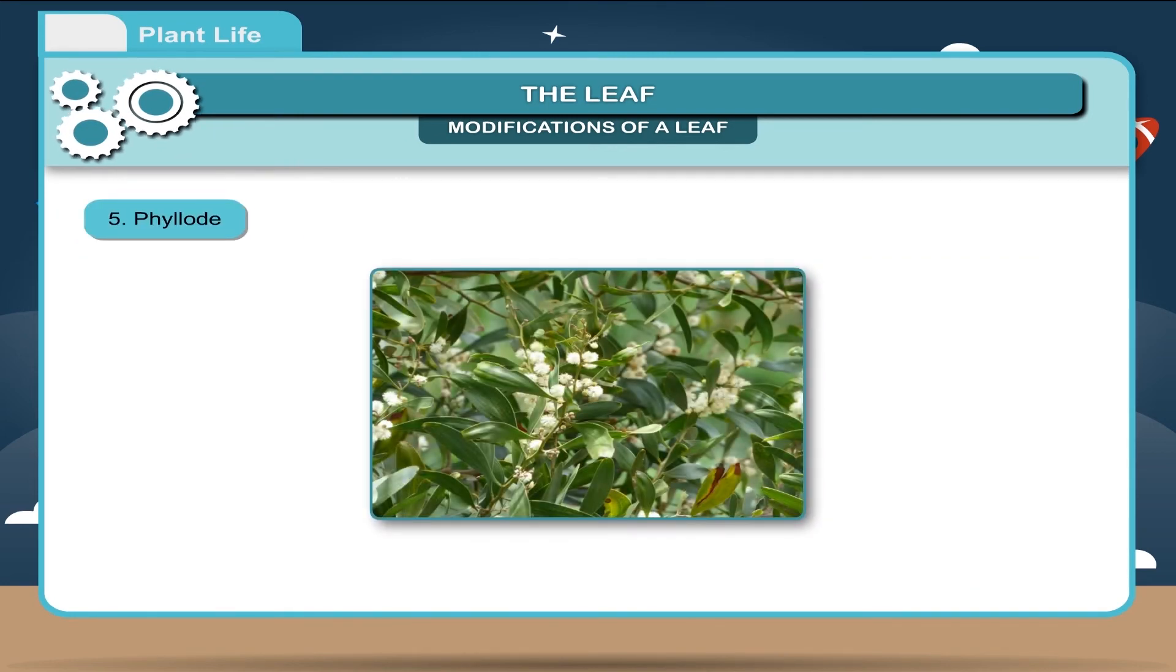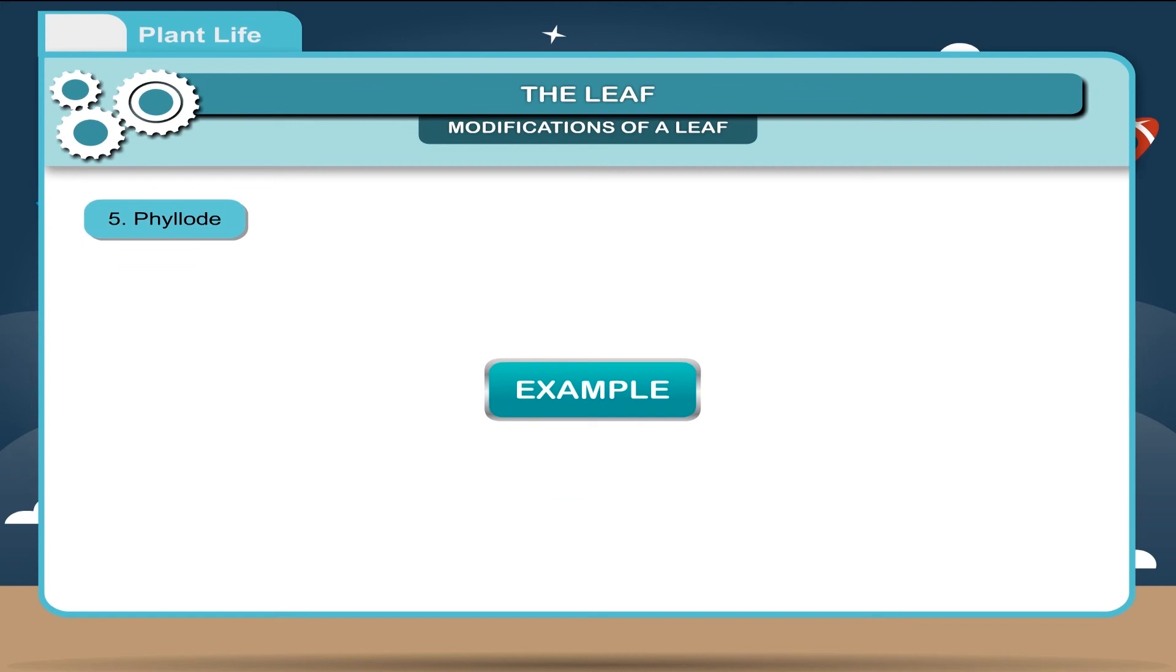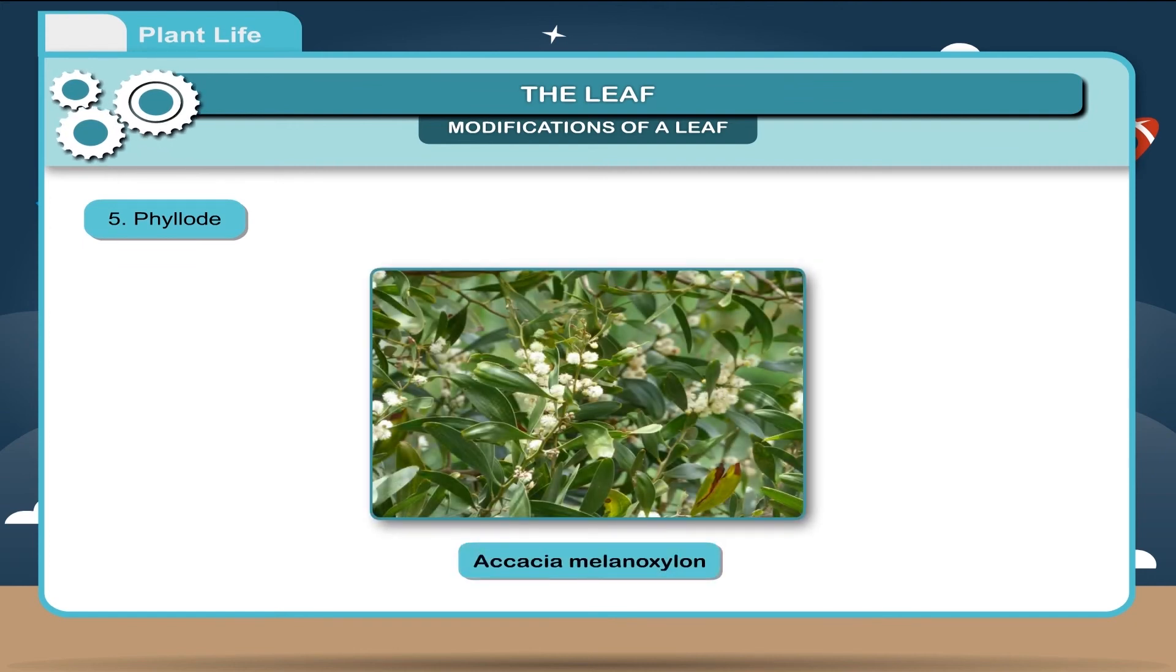Phyllode. Sometimes, the leaf petiole is modified into flattened, green, leaf-like structure called phyllode. It carries out photosynthesis. Example, acacia melanoxylon.